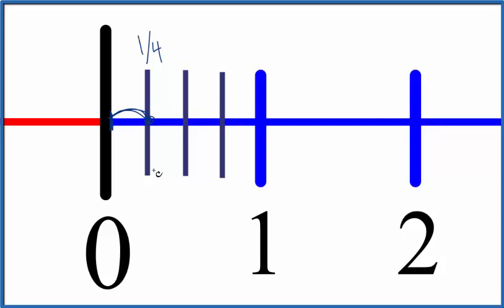And if you divide one by four, you get zero point two five as a decimal. So that's also the same line on the number line here.